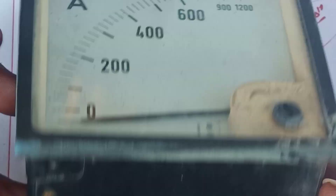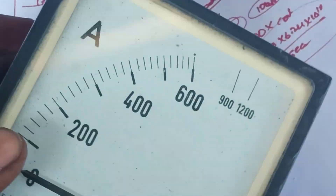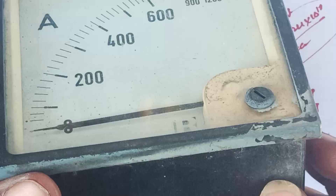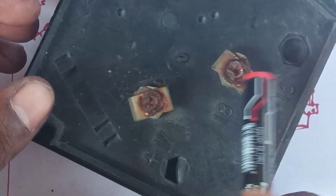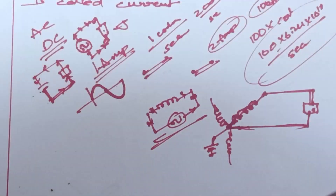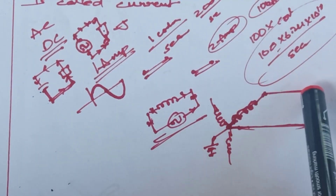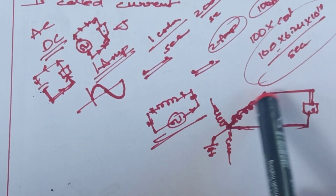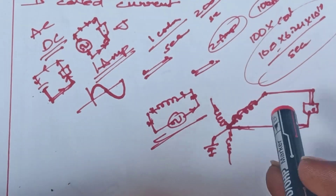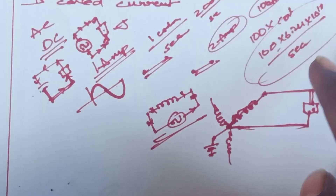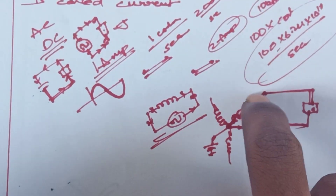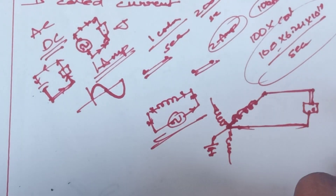I am going to measure the current using an ammeter. An ammeter is connected in series. There is a load, and we want to know what current flows through this load. I am going to cut a wire here and connect the ammeter terminals in series at that point.